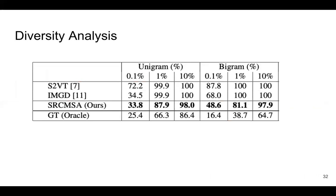We also evaluate the diversity of the model using word coverage, since diversity is an important factor in generated questions. Word coverage — for example at the 0.1% level — means the top 0.1% most frequent words in our generated questions cover how many portions of all generated words. A smaller number indicates more diverse generated questions. We found our proposed model can generate more diverse questions than the baseline models.